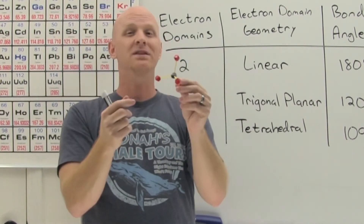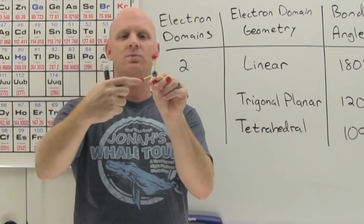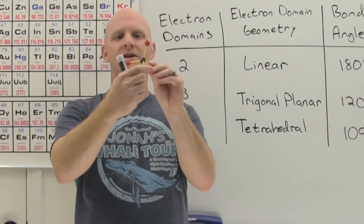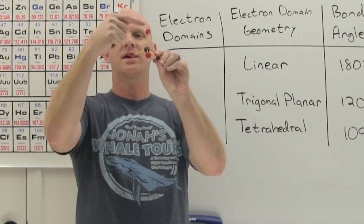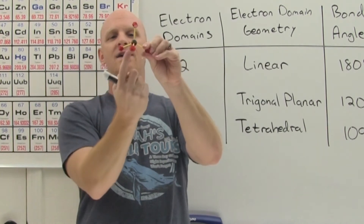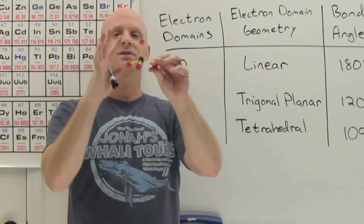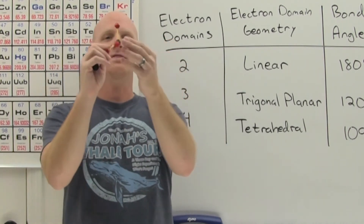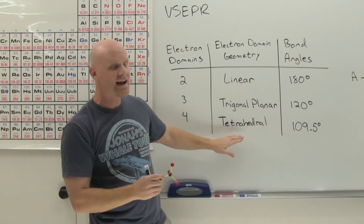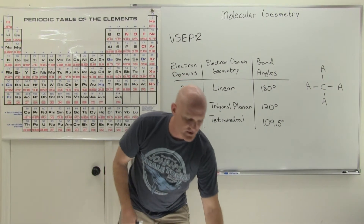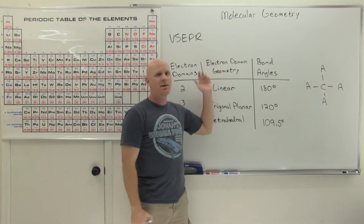Tetra means four, and hedral means faces. This model has four triangular faces — one with each set of three positions — giving it the name tetrahedral. These are your three fundamental electron domain geometries: linear, trigonal planar, and tetrahedral.